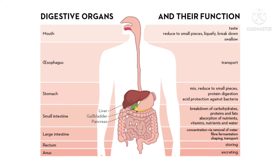Food passes from the mouth through a thin long tube called the food pipe and reaches the stomach. The stomach is a sac-like organ where food is broken down further. Food from the stomach then passes into the small intestine, where all the useful nutrients are absorbed by the blood and taken to all parts of the body.